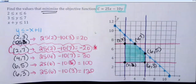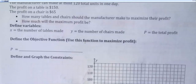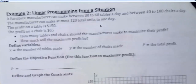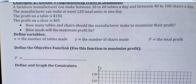Most of the problems we're going to see like this are like what we have on the back, where it actually is a real situation and we have to set up the constraints and then either maximize or minimize. This one we're going to maximize profit — usually it's maximize profit or minimize cost. A furniture manufacturer can make between 30 and 60 tables a day, between 40 and 100 chairs a day, and the manufacturer can make at most 120 total units — tables and chairs together. The profit on a table is $150 and the profit on a chair is $65. How many tables and chairs should we make to maximize profit, and what is that maximum profit?